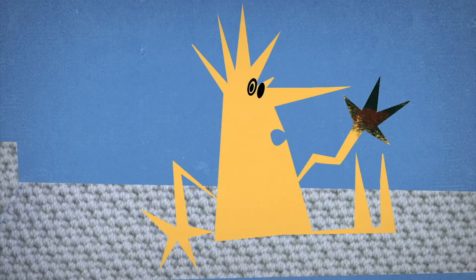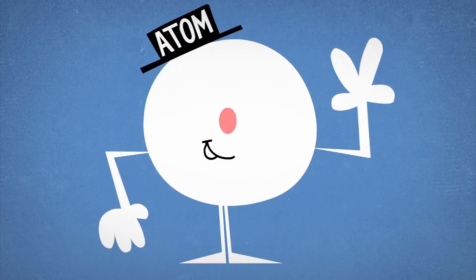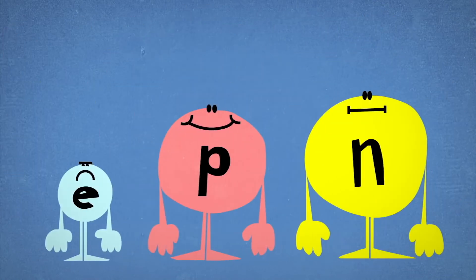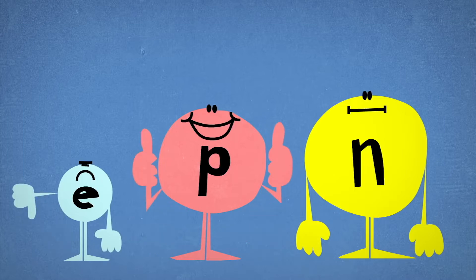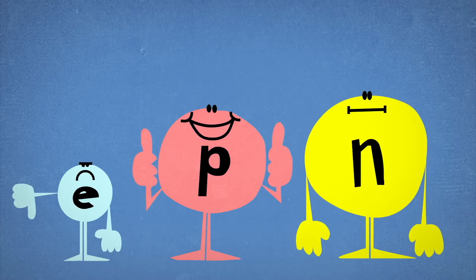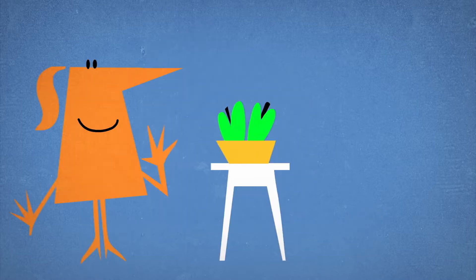To understand static electricity, we first need to know a bit about the nature of matter. All matter is made up of atoms that consist of three types of smaller particles: negatively charged electrons, positively charged protons, and neutral neutrons. Normally, the electrons and protons in an atom balance out, which is why most matter you come across is electrically neutral.